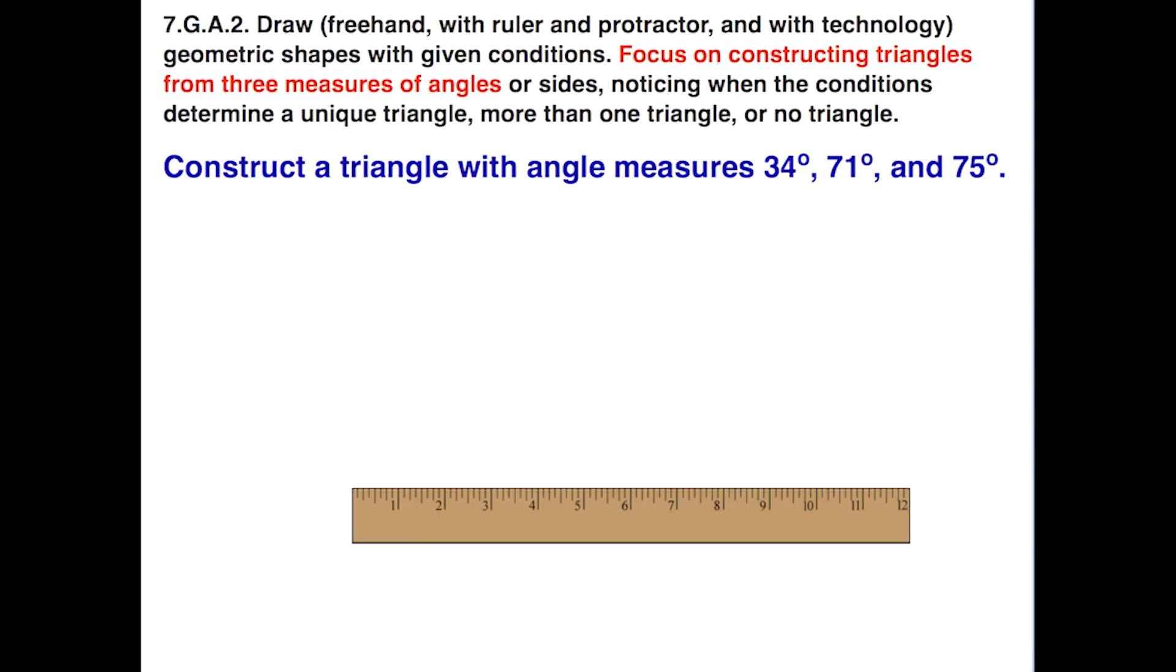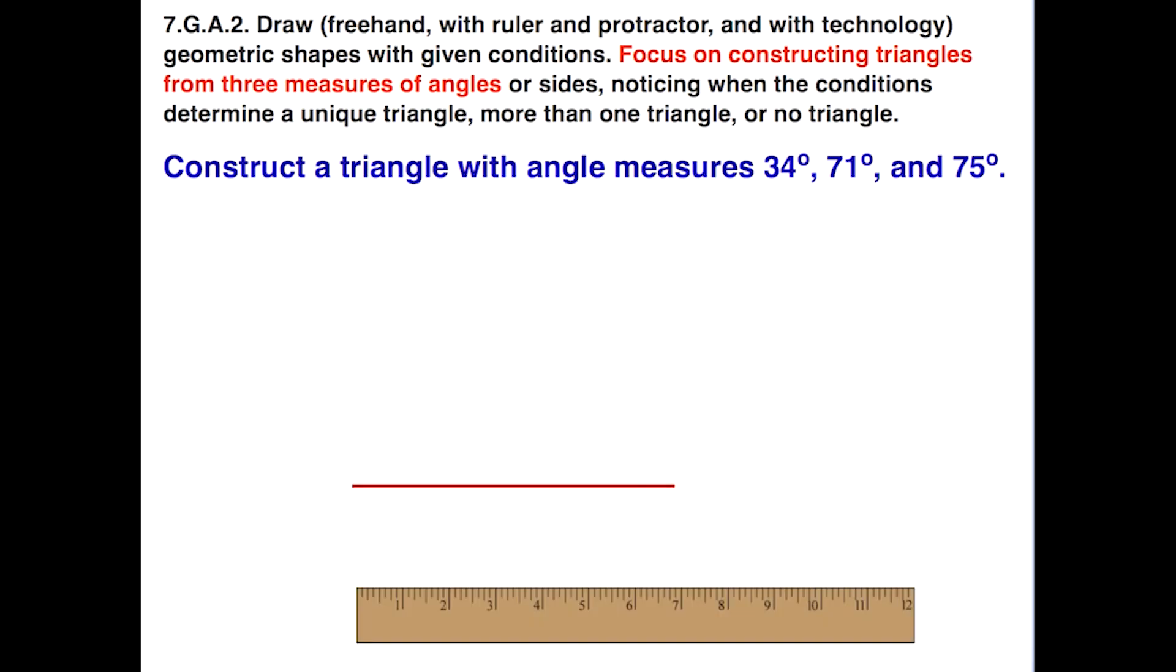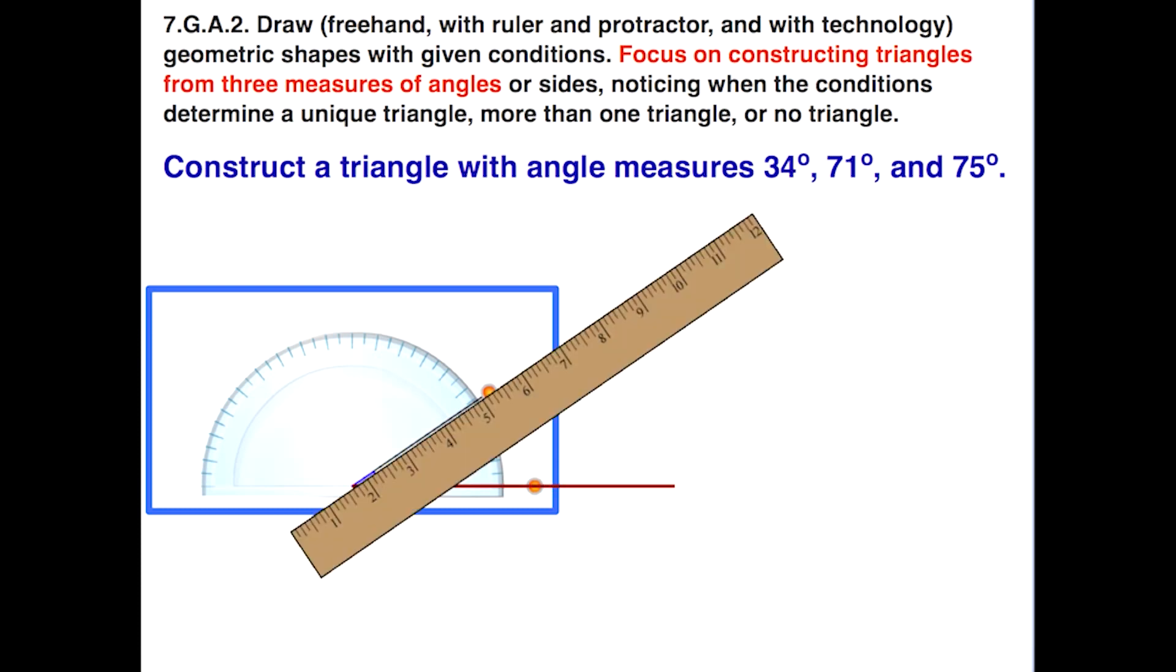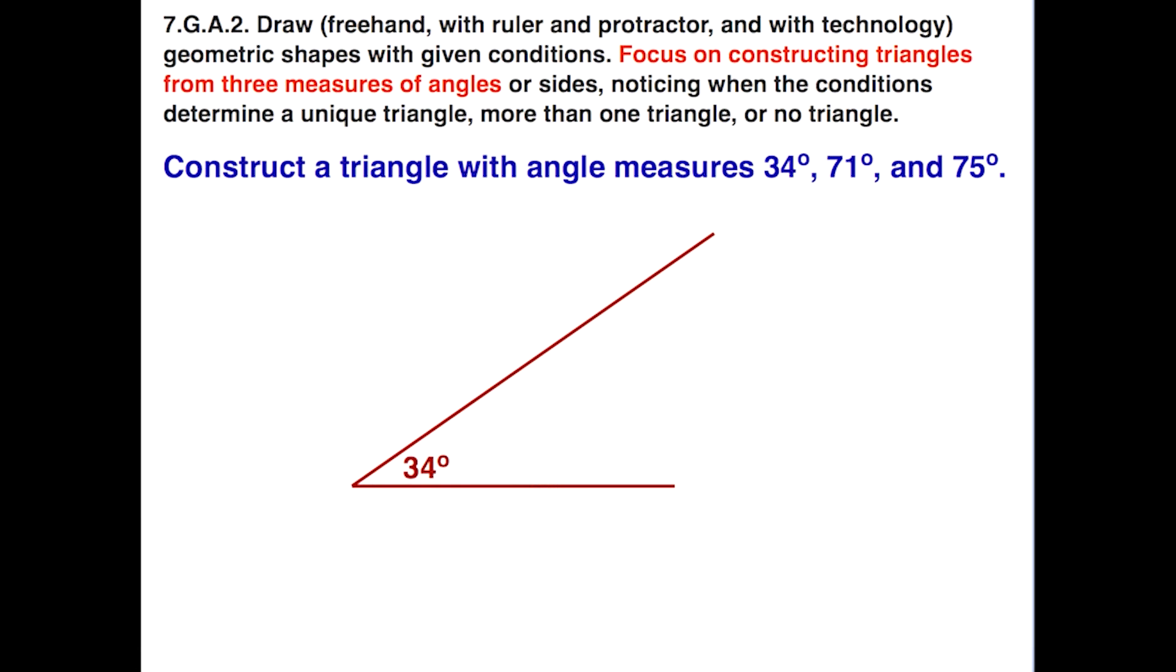Well, let's take our ruler and let's draw a segment. And let's start off by measuring off a 34 degree angle. So we take our protractor and we do that. And so we use our ruler to mark off that segment so that we have this ray. This is the beginning foundation for our triangle. So far we have our one angle of 34 degrees.